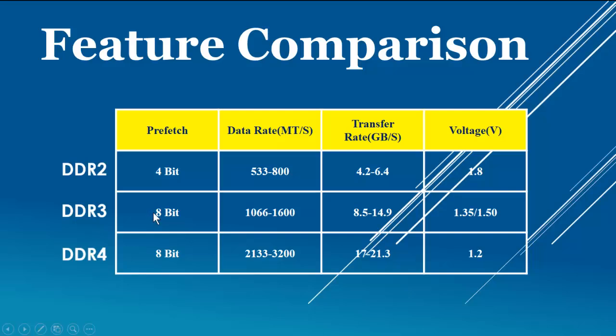whereas DDR3 and DDR4 use 8 bit memory for prefetching. The next feature is data rate in million transfers per second. DDR2 has 533 to 800 million transfers per second,